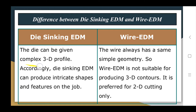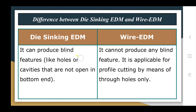The die in die-sinking EDM can be given a complex 3D profile; accordingly, die-sinking EDM can produce intricate shapes and features on the job. In wire EDM, the wire always has a simple geometry, so wire EDM is not suitable for producing 3D contours — it is only suitable for 2D cutting purposes.